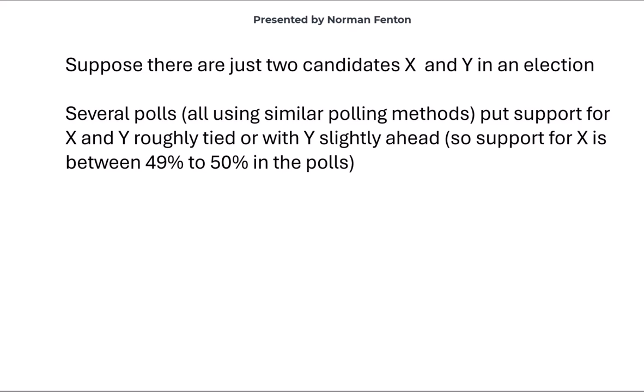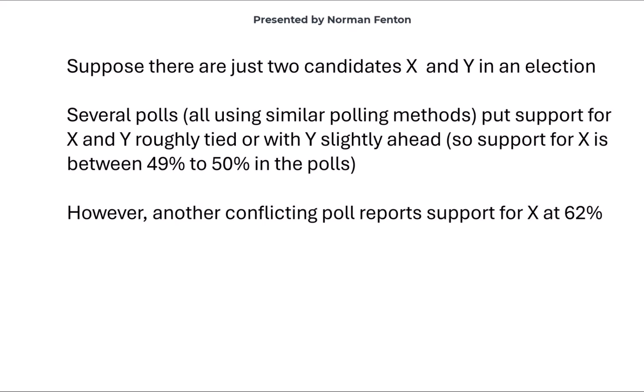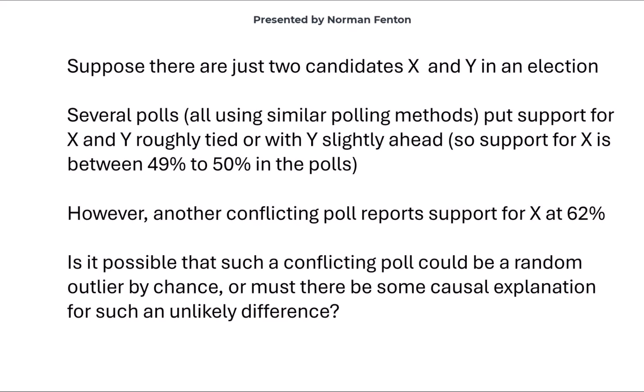Polls put support for candidate X at around 50% or slightly below. They're all fairly consistent. But then we've got a poll from a very different company suggesting that support for X is at 62%. Is it possible that all the polls are unbiased and that the 62% is just an outlier, it just happened by chance? Or is there some causal explanation for the differences in these polls?